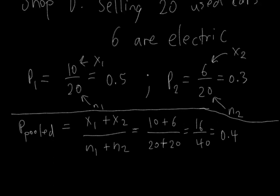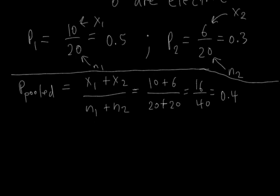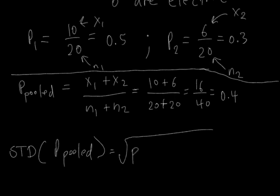Where this becomes important is when we actually compute the standard deviation, the pooled standard deviation. The standard deviation of P pooled is equal to the square root of P pooled times 1 minus P pooled times 1 over n1 plus 1 over n2.